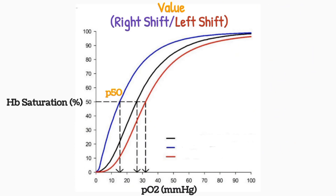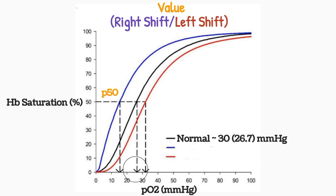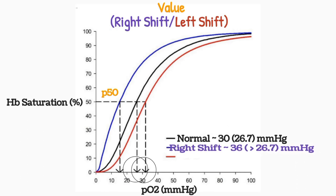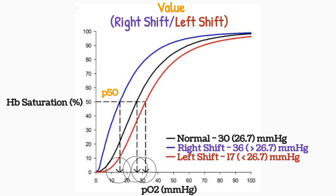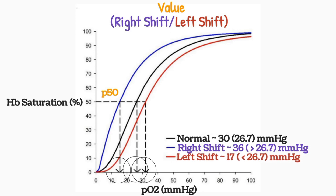The normal value of P50 is 26.7 mmHg. In case of right shift, the P50 value is greater than 26.7, that is 36 mmHg. In case of left shift, the P50 value is less than 26.7, that is 17 mmHg.